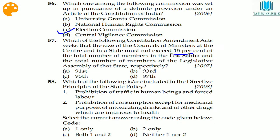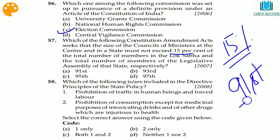Question 57: the maximum strength of the Council of Ministers is limited to 15% of the total House strength by the 91st Amendment Act. Cabinet ministers cannot exceed 15% of the total membership of that House. So option A is the answer.